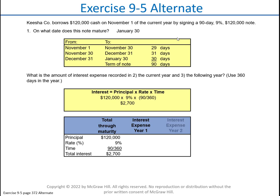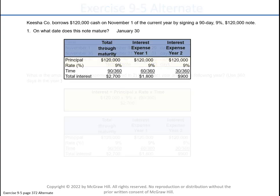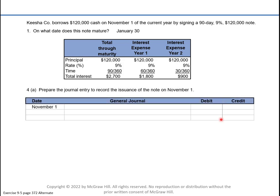The total interest is $2,700. Part of it will be in year one and part in year two. The part in year one covers 60 days — that's 29 days in November plus 31 days in December. So $120,000 times 9% times 60/360 equals $1,800 in year one, and the remainder of $900 will be in year two.